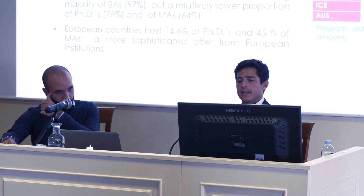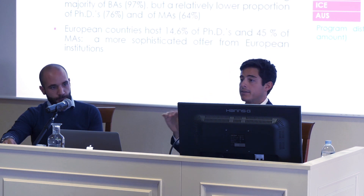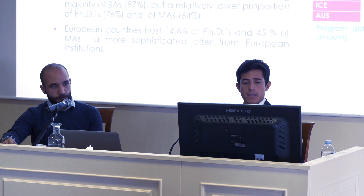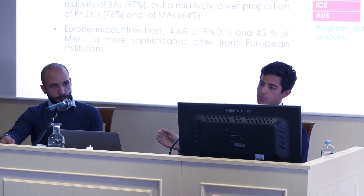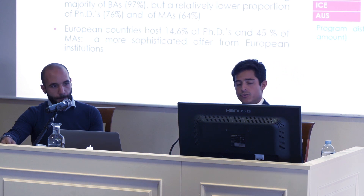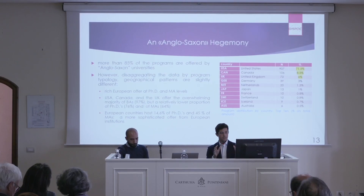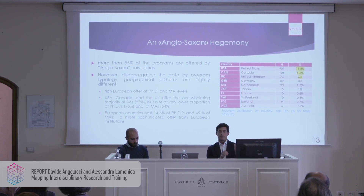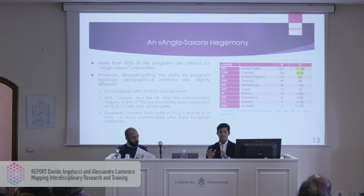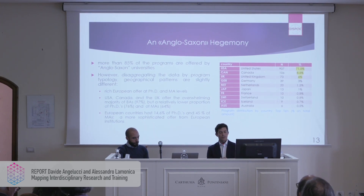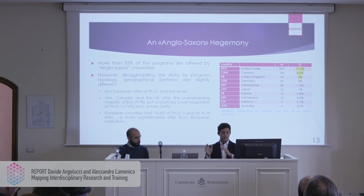If we disaggregate the data by program typology and program level — BA, Masters, or PhD — we find a slightly different pattern. The overwhelming majority of bachelor programs are offered by US, Canadian, and UK institutions — about 97% — but a lower proportion of PhDs and Masters. Looking at Europe, we can see that half of Masters offered worldwide are European Masters. We may suggest that the offer in Europe is dedicated to graduate level — Masters and postgraduate PhDs.